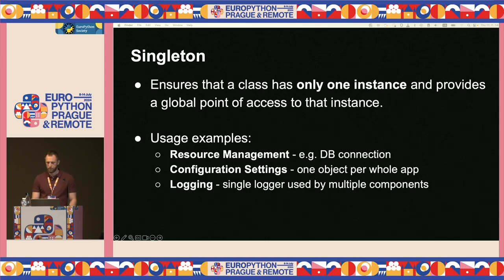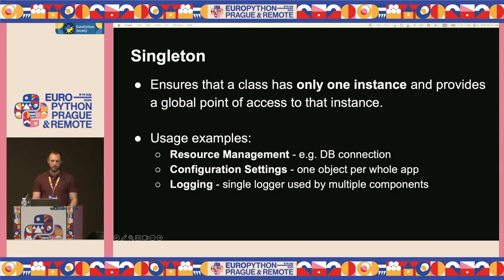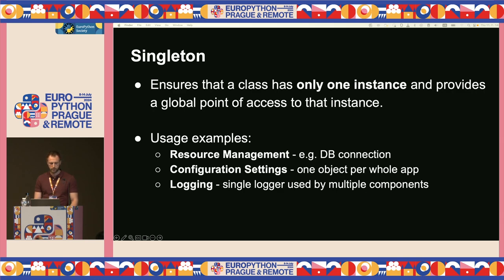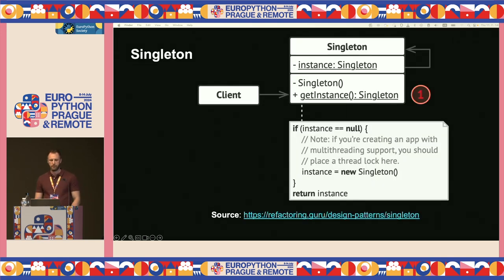Let's start with one of the most common creational patterns: Singleton. The Singleton pattern ensures that a class has only one single instance and provides a global point of access to that instance. Use cases include resource management such as a database connection that must remain open for the whole application, configuration settings with one single object accessible application-wide, and logging, where a single logger is shared by multiple components.